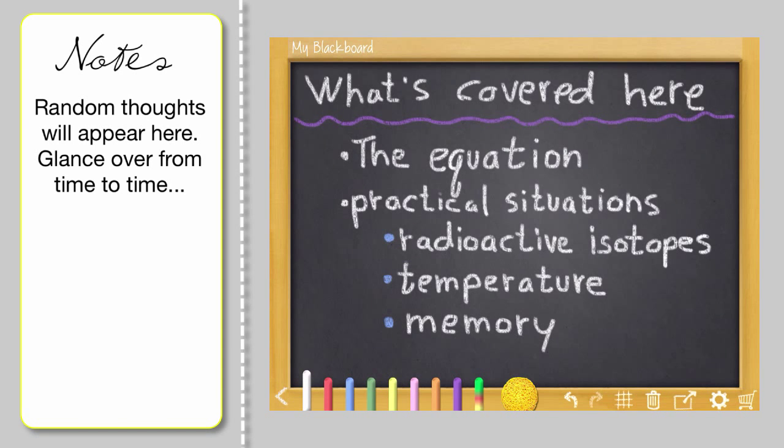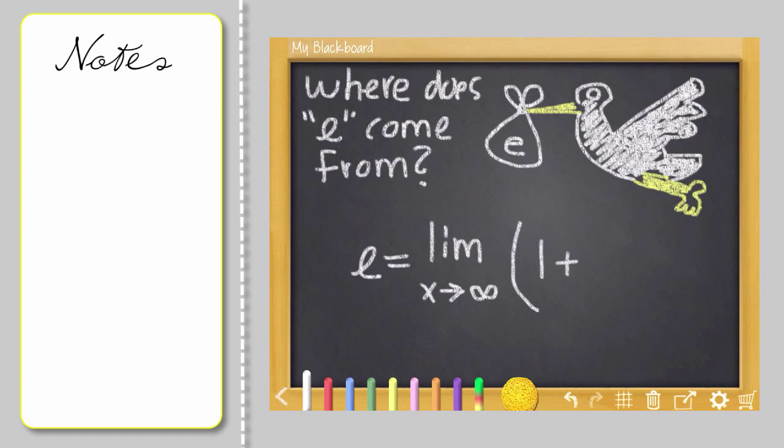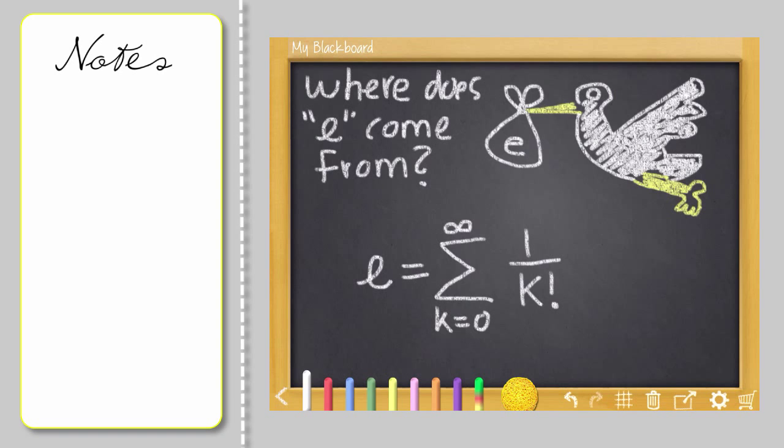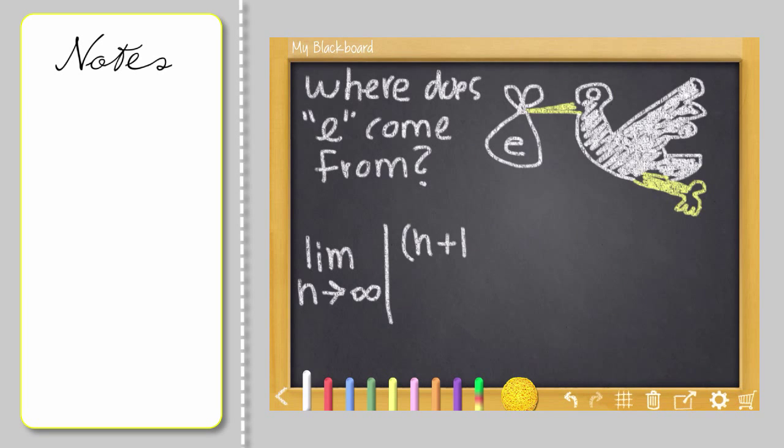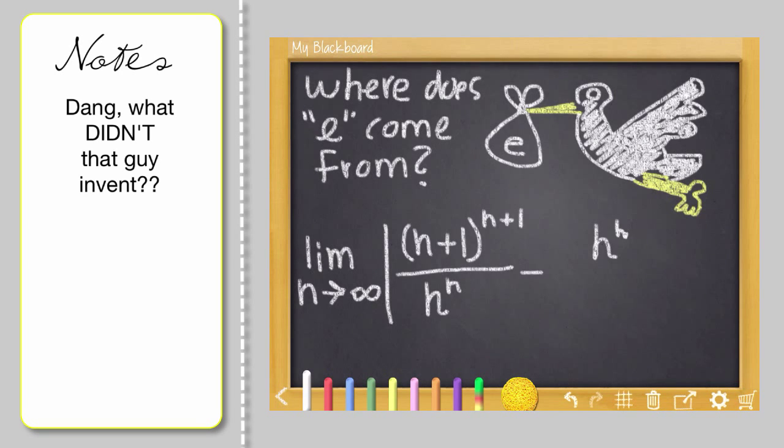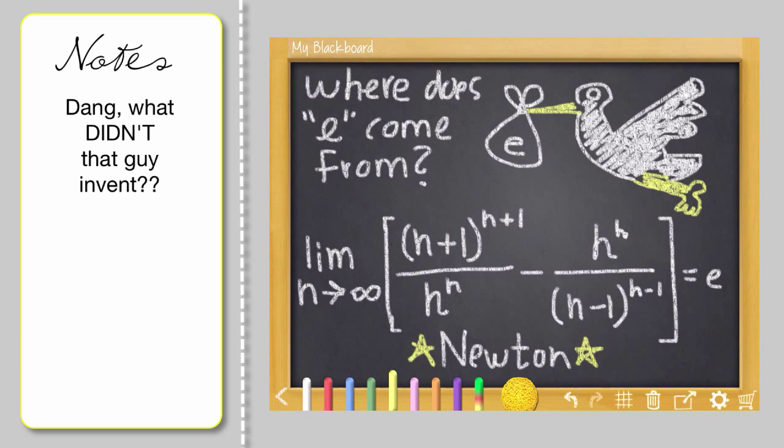I am not going to talk about where E itself comes from because then I have to talk about words like limits, infinity, summations, and I want to keep things down to earth. But I did find this really cool equation by Sir Isaac Newton. He came up with this to express E and it's kind of cool to look at.